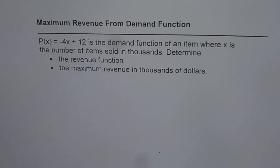I'm Anil Kumar and here is an application question to find maximum revenue from demand function. P(x) = -4x + 12 is the demand function of an item where x is the number of items sold in thousands. Determine the revenue function and the maximum revenue in thousands of dollars.